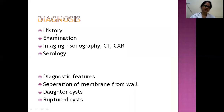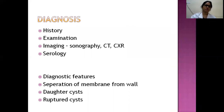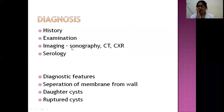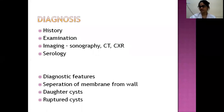Diagnosis: history and examination, followed by imaging. Ultrasonography is the investigation of choice. CT, MRI, and chest X-ray (especially for lung cysts) can also be done. Serology is also performed. The ultrasound picture shows stages from unilocular cyst (CE1) to honeycomb appearance (CE2), water lily sign (CE3A with collapsing cyst wall), daughter cysts with solid matrix (CE3B), disappearing daughter cysts (CE4), and finally calcification (CE5).